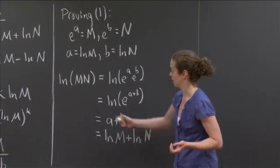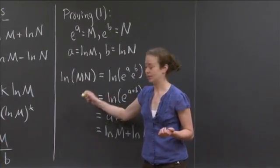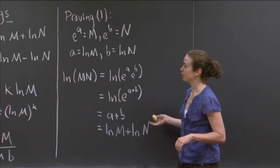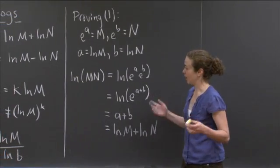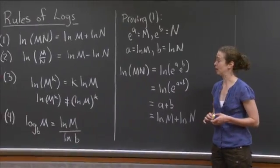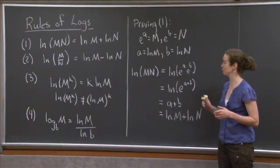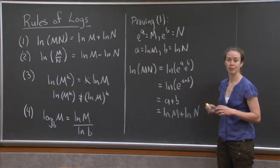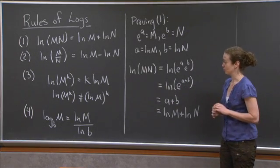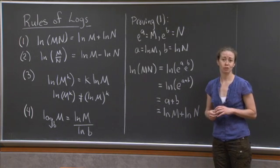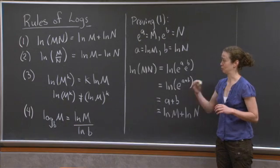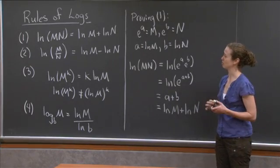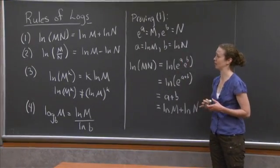We've shown that natural log of the quantity m times n is equal to natural log of m plus natural log of n. In a similar flavor, one could immediately prove rule 2, and rule 3 follows quite similarly as well, using different exponent rules. Some of these may also be proven in a later lecture, but it would be helpful to try proving rules 2 and 3 on your own using the same approach.